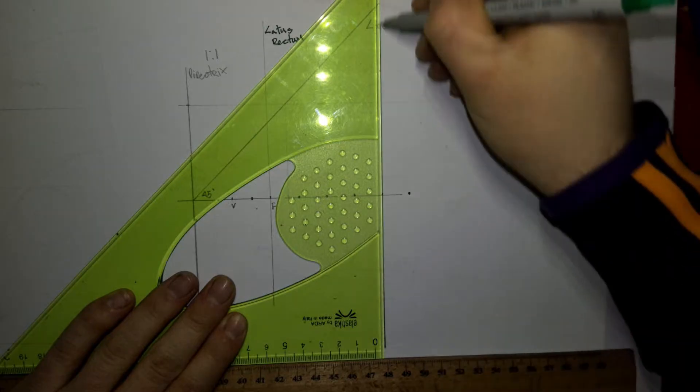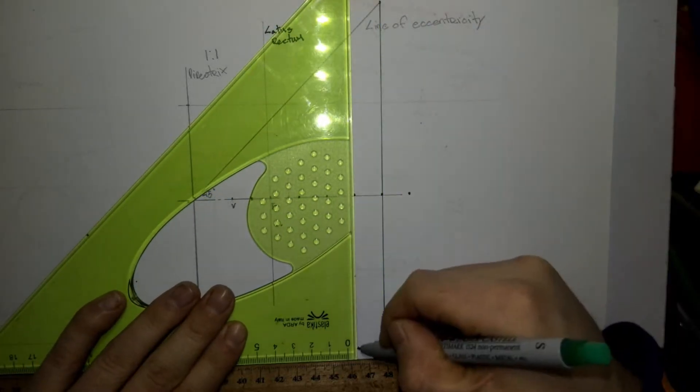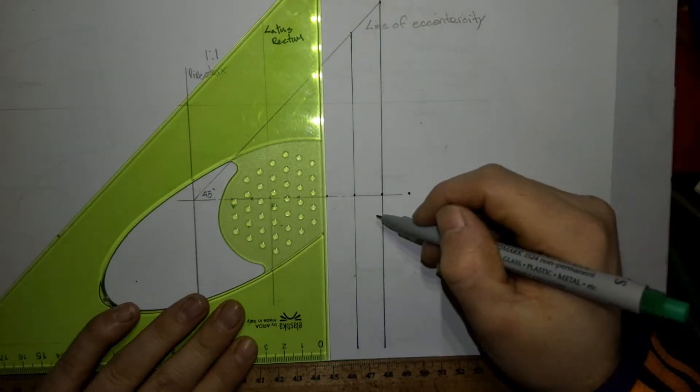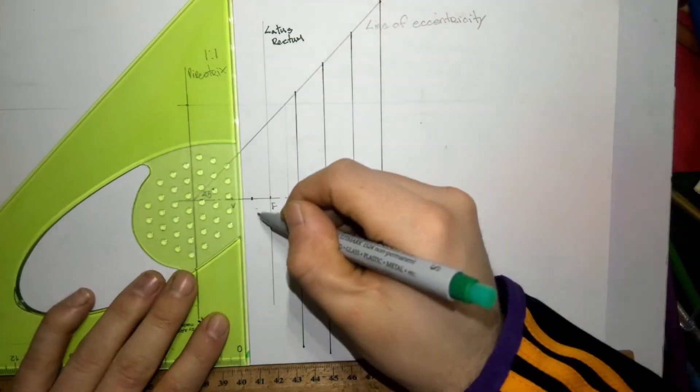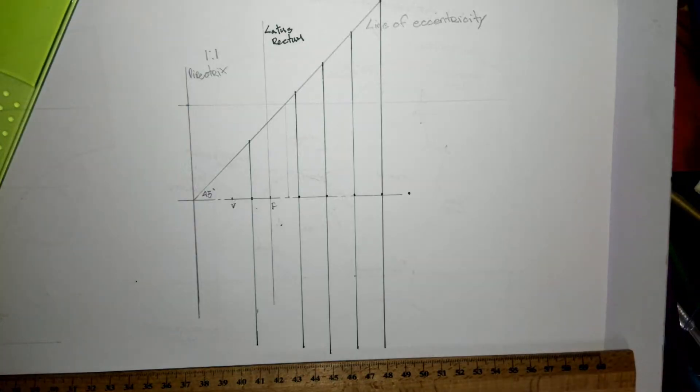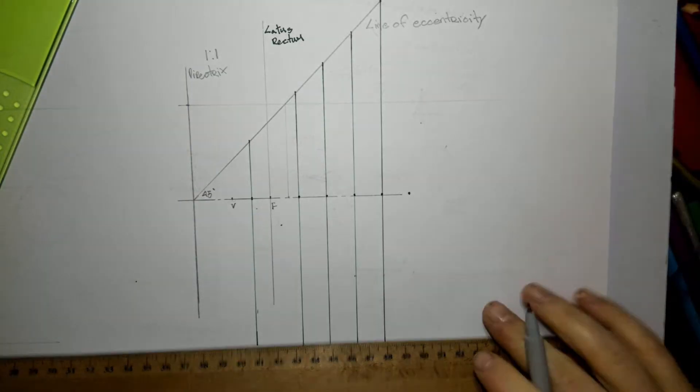Draw vertical lines from these points until they hit the line of eccentricity. Now where they hit the line of eccentricity, I'm going to bring that horizontally until they hit the latus rectum.